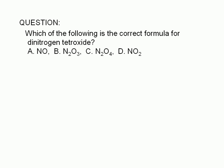Which of the following is the correct formula for dinitrogen tetroxide? A. NO, B. N2O3, C. N2O4, or D. NO2.